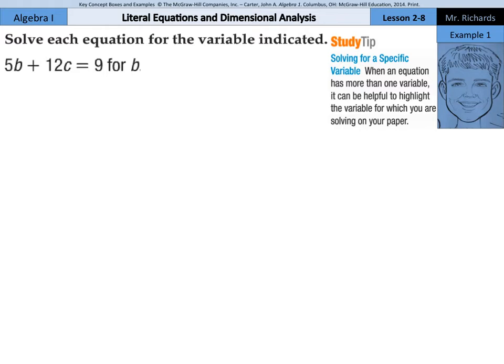Our directions for this first example are to solve the equation for the variable indicated. Our study tip: solving for a specific variable. When an equation has more than one variable, like this one here, 5b plus 12c equals 9, it can be helpful to highlight the variable for which you are solving on your paper.